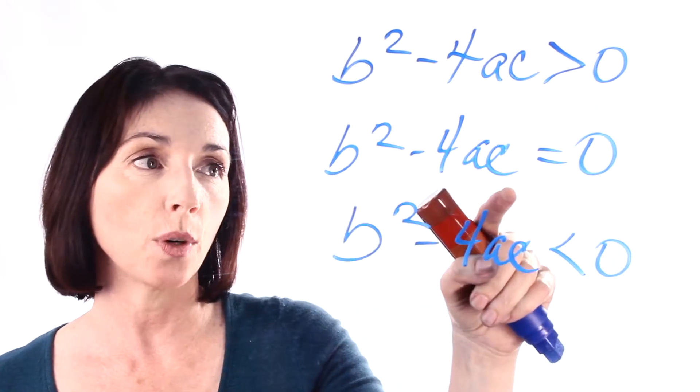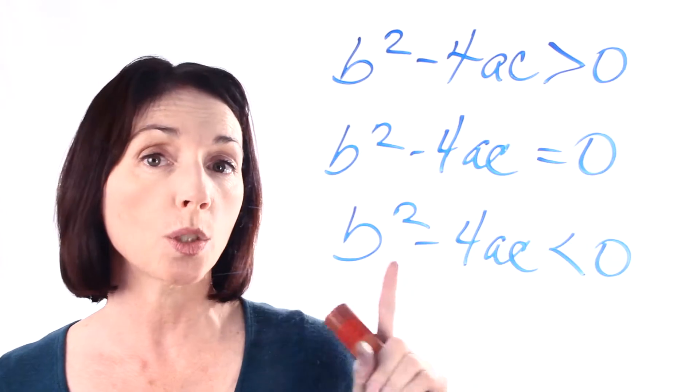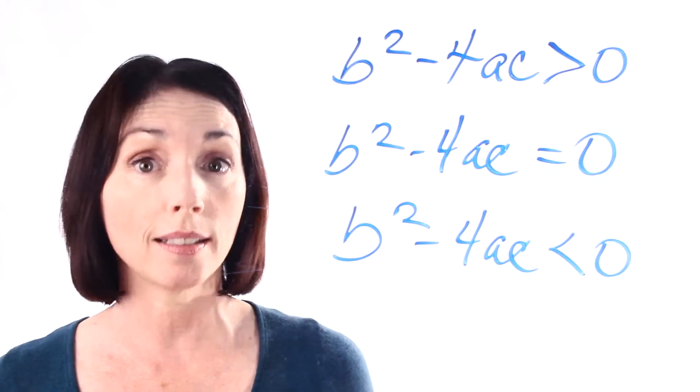If b squared minus 4ac is equal to zero, it means there's one real root and it's called a double root.